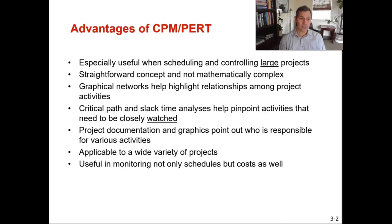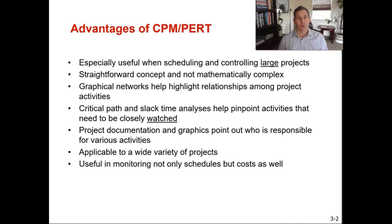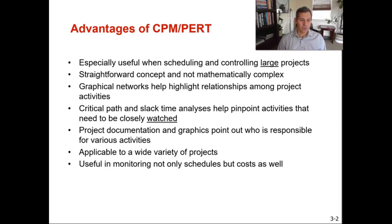The graphical networks help to highlight the relationships among the project activities. When we draw an AON network diagram, it's very easy to see what steps precede others and what needs to be done before other activities can start. The critical path method and slack time help us pinpoint the activities that need to be watched. When you're doing a project, you have to do every activity — if there are 20 steps, you have to do all 20 — but some are more critical than others. Those are called critical activities and they are on the critical path. CPM and PERT are also useful in monitoring not just schedules but costs as well. You can assign costs to every activity and track the project's finances.